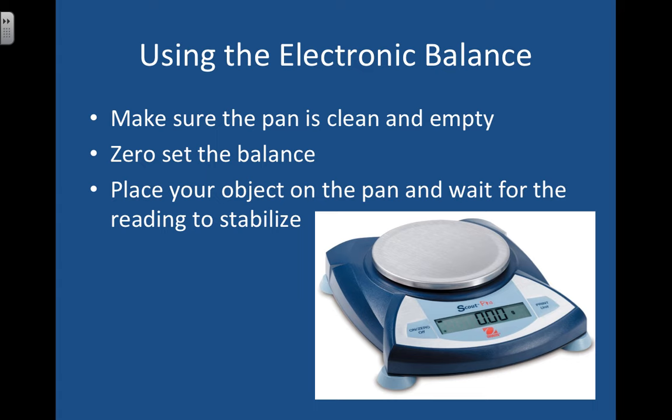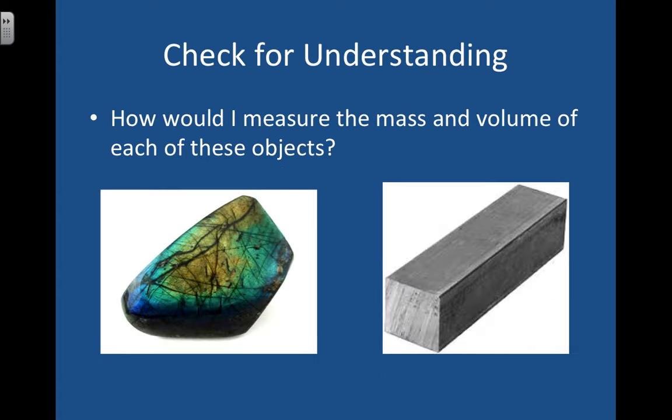All right, so there's an overview of how to measure volume and mass. Let's just do a quick check for understanding. How would I measure the mass and the volume of each of these objects? So here on the left, I've got a piece of my favorite stone, my favorite mineral, which is called Labradorite. Isn't it so pretty? And then here on the right, I've got an aluminum bar. So I'd like you to pause and figure out how to measure the mass and the volume of each of these. And then when you're ready, press play. And you can see if you have it right.